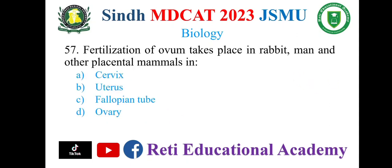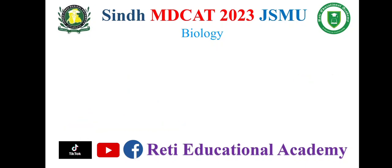Question 57: Fertilization of the ovum takes place in rabbit, man, and other placental mammals in — A. Cervix, B. Uterus, C. Fallopian tube, D. Ovaries. The correct option is C: Fallopian tube.